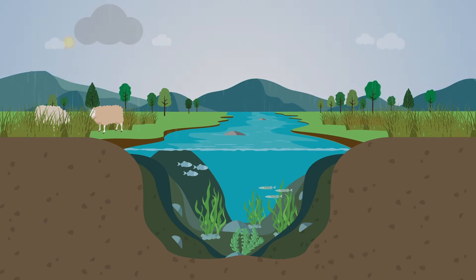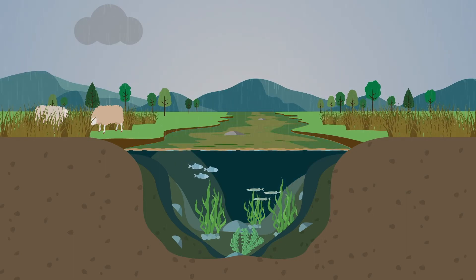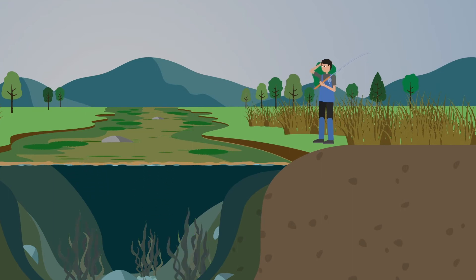When surplus nutrients are lost from fields, rivers may become polluted. Eutrophication can occur, leading to excessive plant and algal growth. This is damaging to aquatic biodiversity and drinking water quality, as well as to recreational and fishing industries.